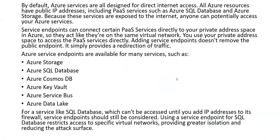By default, Azure services are all designed for direct internet access. All Azure resources have public IP addresses, including PaaS services such as SQL database and storage. Because these services are exposed to the internet, anyone can potentially access them. Service endpoints can connect certain PaaS services directly to the private address space in Azure, so they act like they are on the same virtual network.